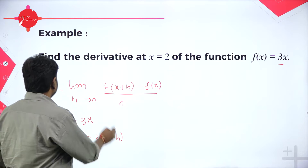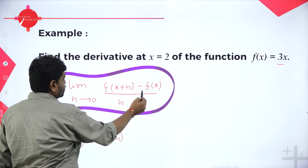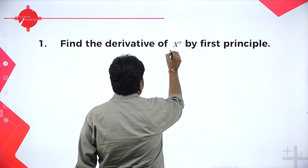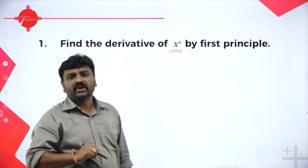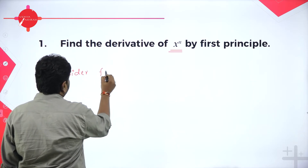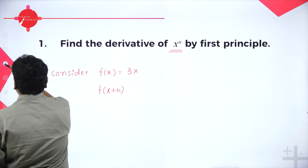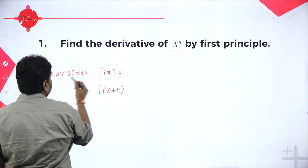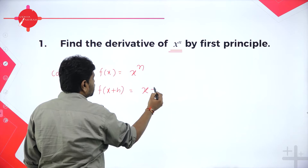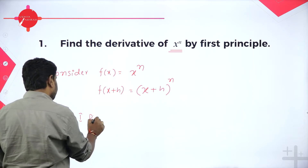You should be thorough with the method of first principles: f'(x) = limit as h tends to 0 of [f(x+h) minus f(x)] divided by h. Now we want to find the derivative of x^n by the method of first principles. Consider f(x) = x^n, so f(x+h) = (x+h)^n.